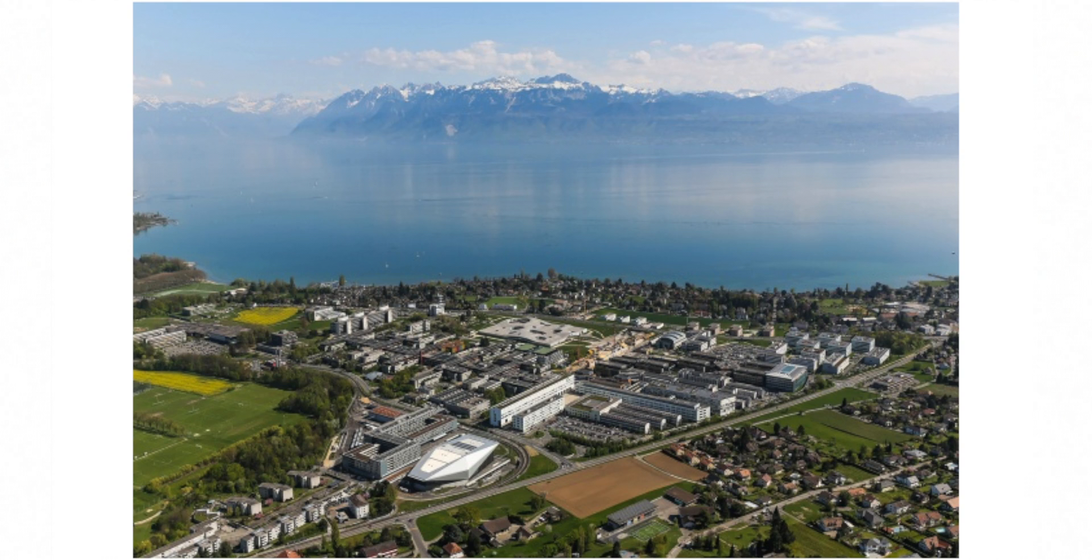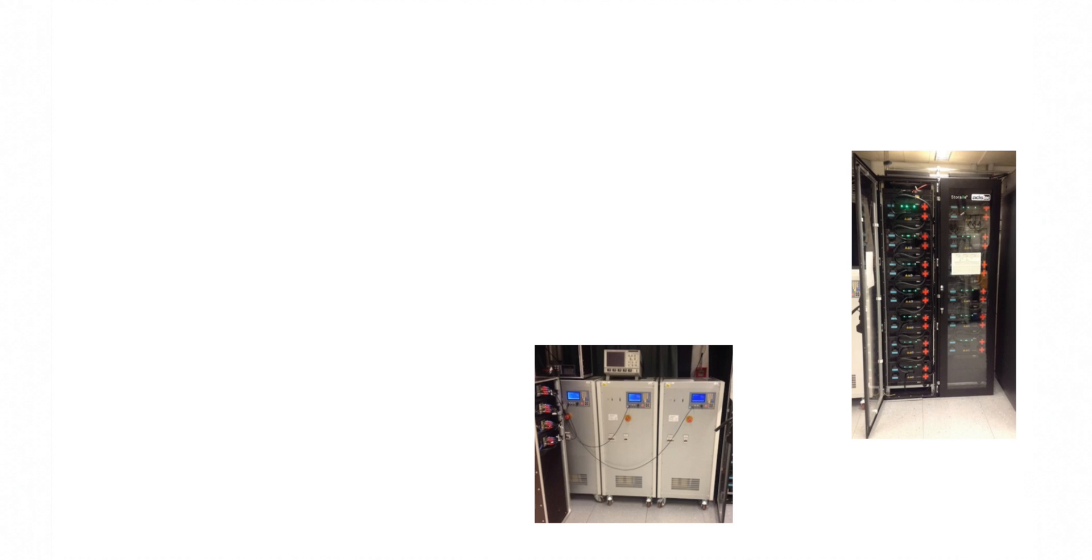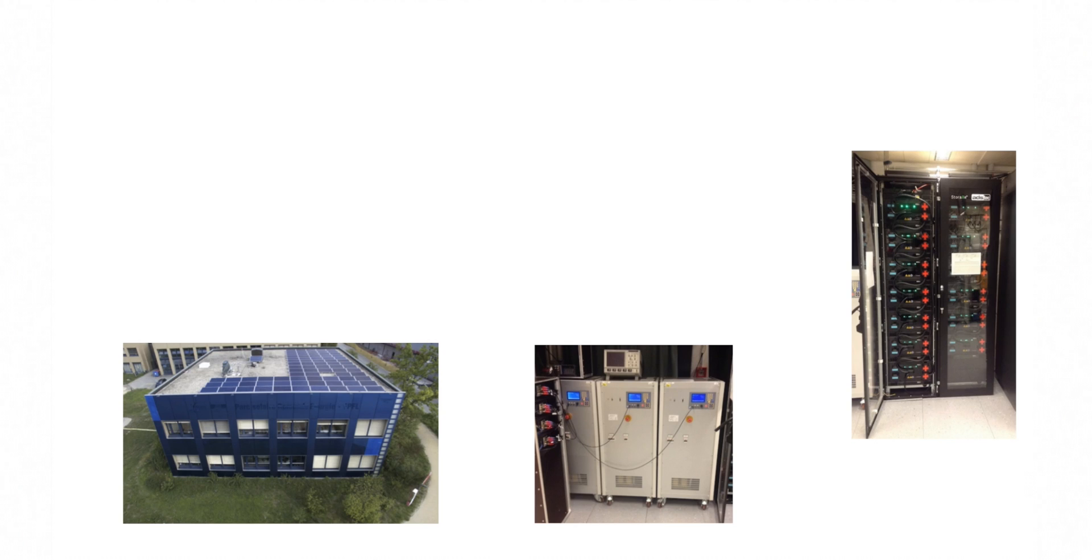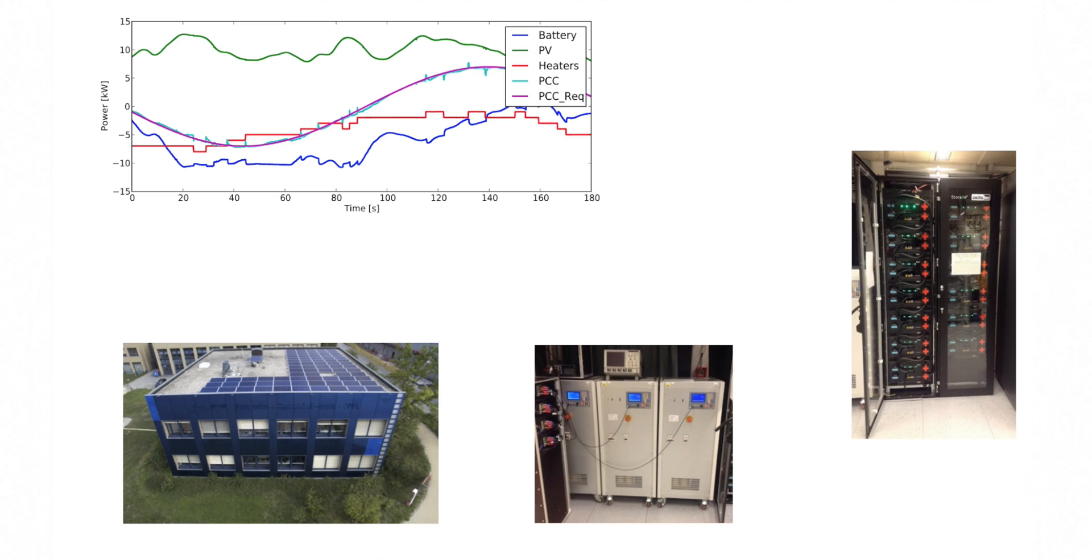At EPFL we have a working technology demonstrator, where COMALAG is used to control a microgrid that includes several devices, such as a battery capable of delivering up to 30 kilowatts of power, load emulators that can consume 10 kilowatts with which we emulate a heating system, and a PV plant on the roof of a building, which causes a volatile power injection into the microgrid of up to 20 kilowatts.